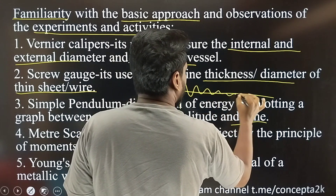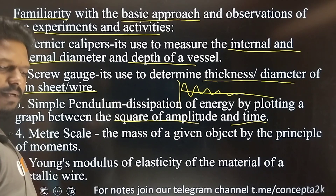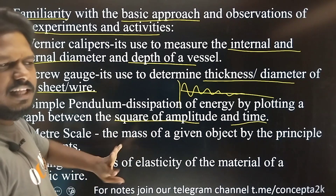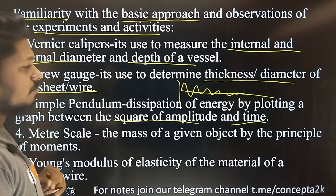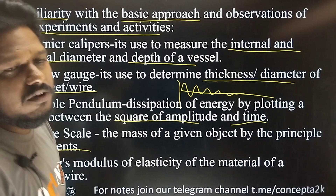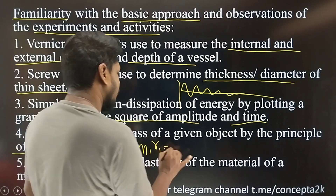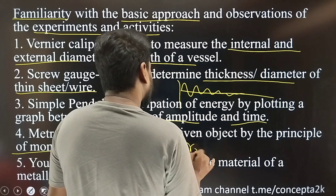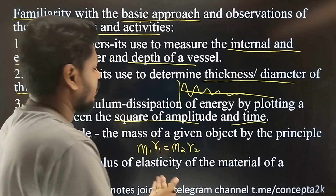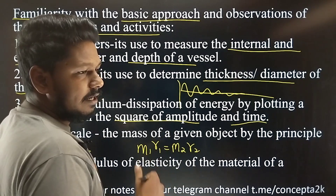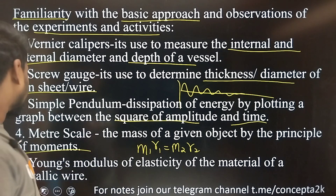We're going to look at the example of the meter scale and find the mass of a given object using the principle of moments: M1 × R1 = M2 × R2. So we're going to look at that formula. I'm going to ask questions about that. Basically, it's the concept of torque.